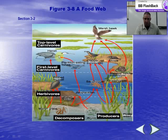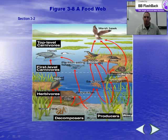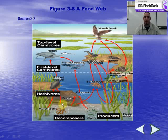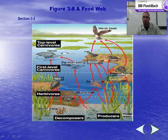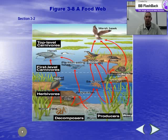Here's a food web — notice all the possible feeding relationships shown by arrows. At the bottom are producers like types of weed and marsh grasses. We have decomposers breaking down detritus, herbivores near the producers, first-level carnivores, and top-level carnivores. Again: 100% energy at the base, 10%, 1%, then 0.1% at the top.